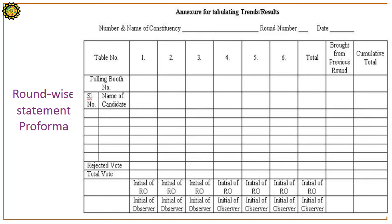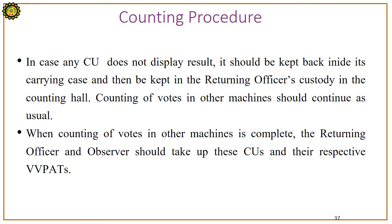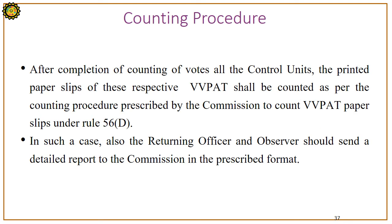The format for the round-wise tabulation sheet is shown on screen. If any control unit does not display results, it should be kept inside its carrying case and kept in the Returning Officer's custody in the counting hall while counting continues for other machines. When counting is complete for other machines, the Returning Officer and observer should take up these control units and their respective VVPATs. After completion, all control units and the printed paper slips of their respective VVPATs shall be counted as per the procedure prescribed under Rule 56D. The Returning Officer and observer must send a detailed report to the commission in the prescribed format.